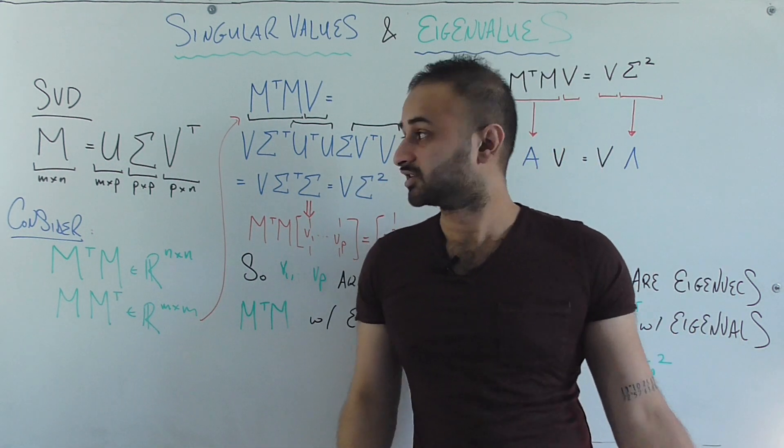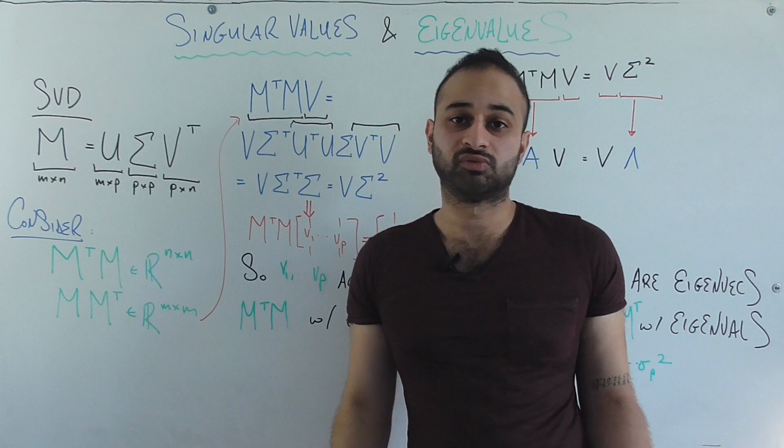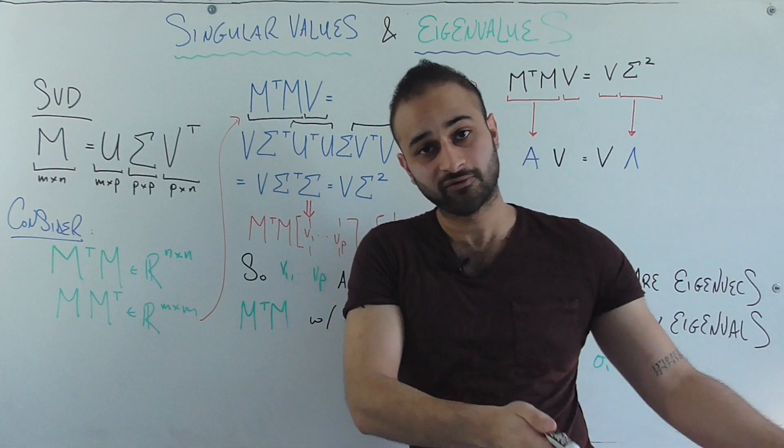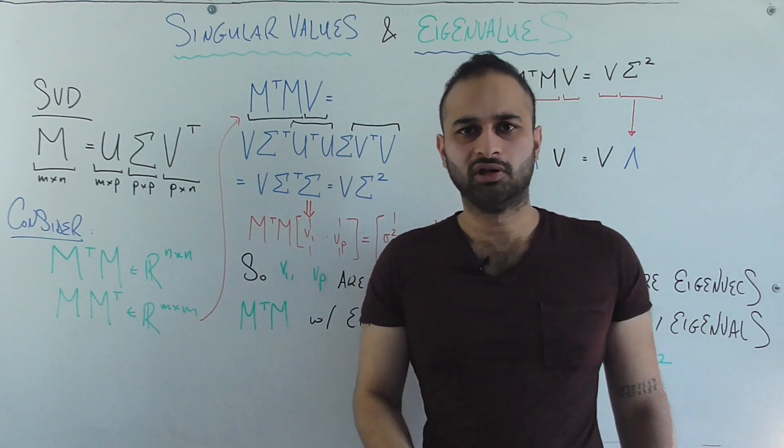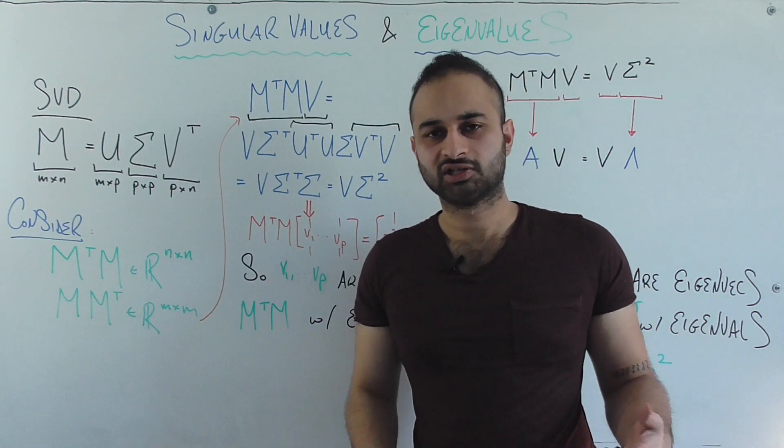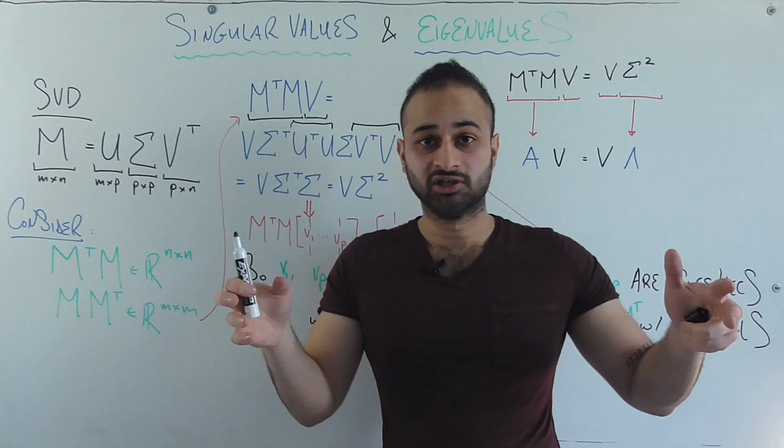We can do another simplification because sigma is a diagonal matrix, which means its transpose is equal to itself. So really we're just going to have V sigma squared. It looks like we didn't do anything very crucial, but let's look at this in a different form, opening up V so we can really see what happened.